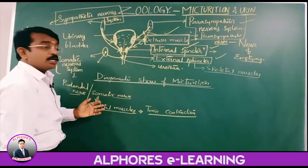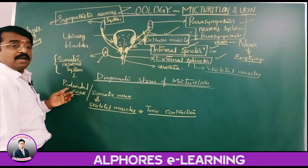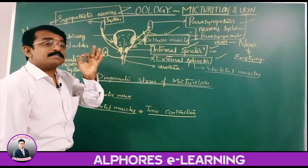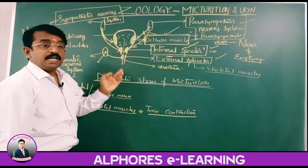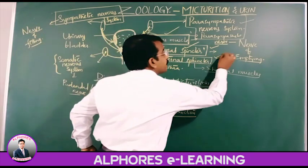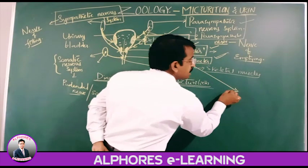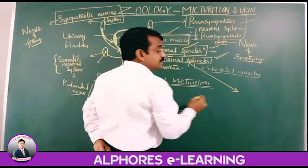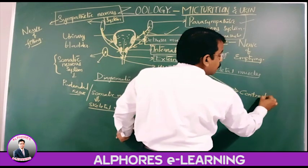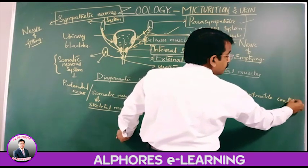The pudendal nerve always causes the sustained contraction of the skeletal muscles, resulting in the external sphincter. Which means, always the external sphincter is in a contractile condition.